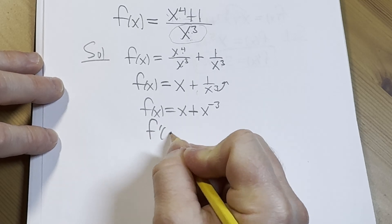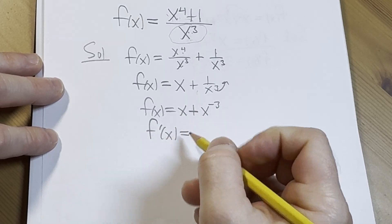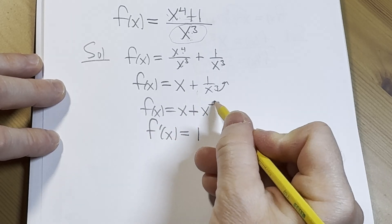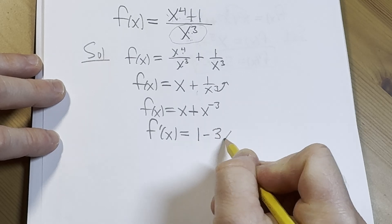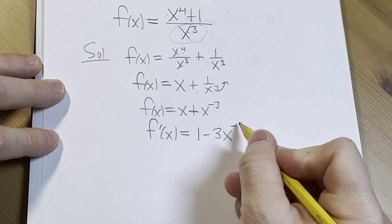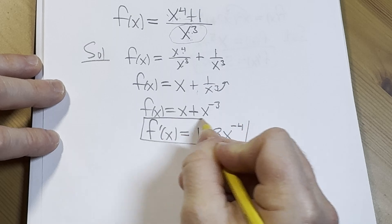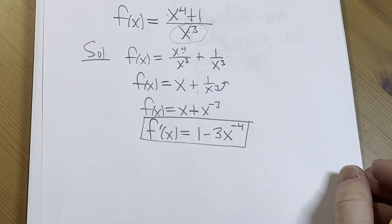f prime of x is equal to, the derivative of x is 1, and put this in the front, so minus 3x, subtract 1 from the exponent, and so we get negative 4. And that would be the final answer.